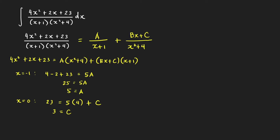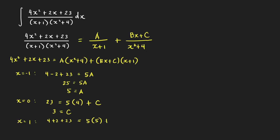To find the value of B we plug in an x value other than −1 and 0, so let's choose x = 1. We get 4 + 2 + 23 = 5(1 + 4) + (B + 3)(2), so 29 = 25 + 2B + 6, which gives 2B = −2, so B = −1.